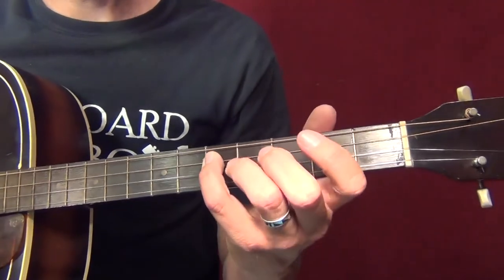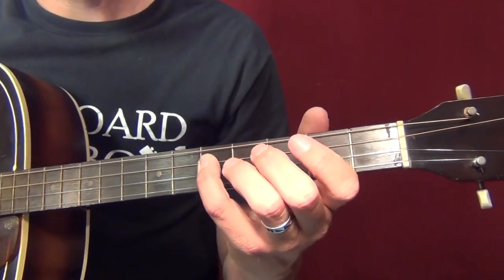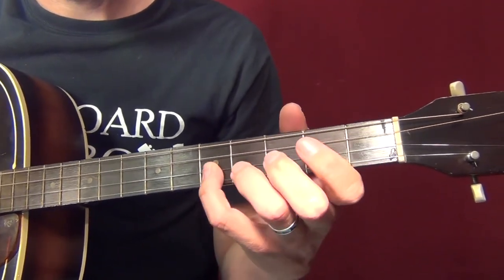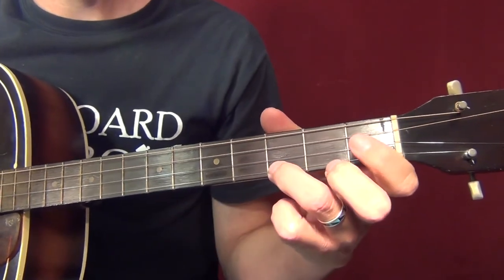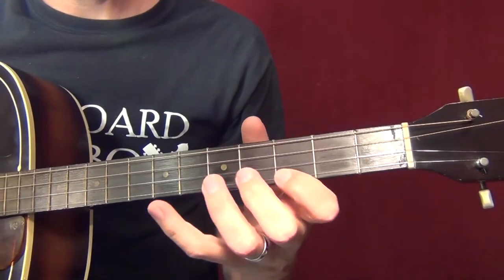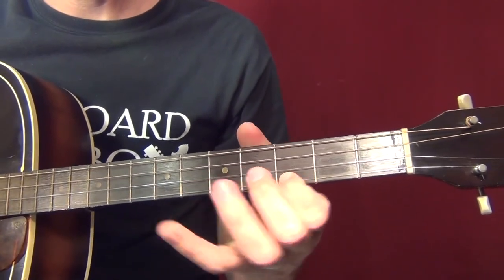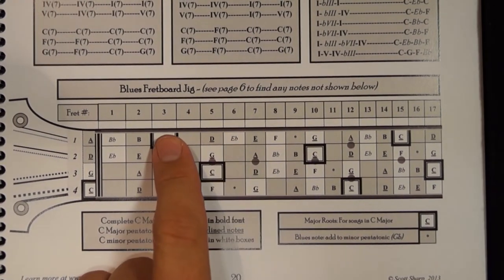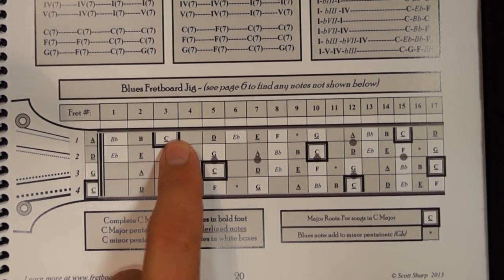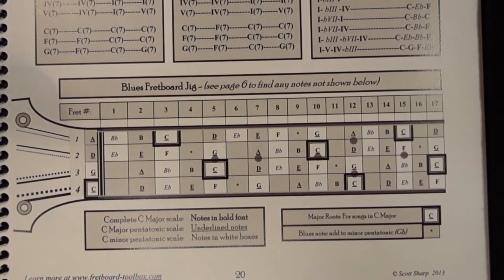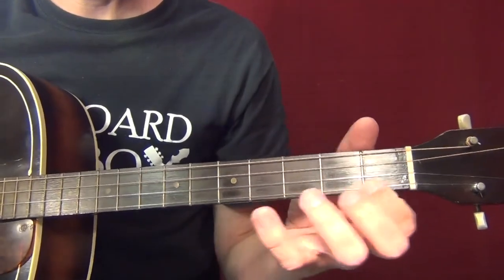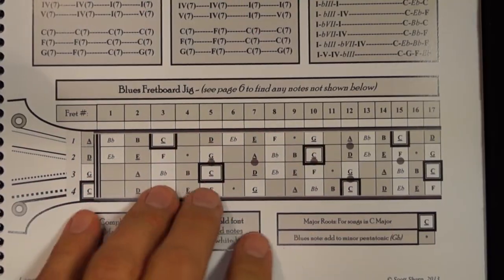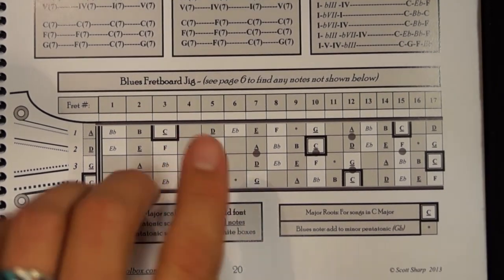Playing the minor pentatonic from C to C here: C, E-flat, F, G, B-flat, C. Then from the higher C position I can play C, E-flat, E natural, then B-flat and slide back up to C. There's all kinds of cool stuff you can do just by playing around with those scales.